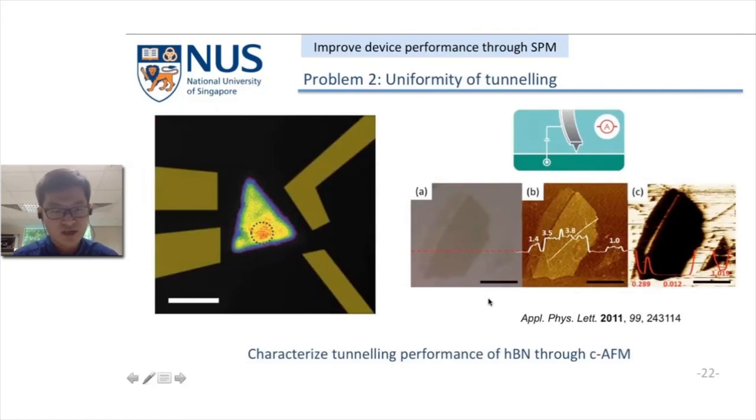Another problem we usually see in this device is that the tunneling of the h-BN enables planar emission, but sometimes it's not uniform. I think if we use conductive AFM to investigate the local conductance of 2D materials, it will be helpful for the devices. For example, these figures show the conductive AFM on h-BN flakes.